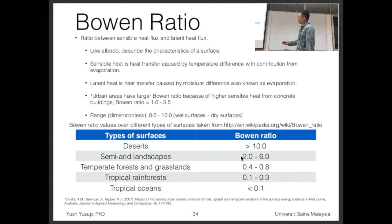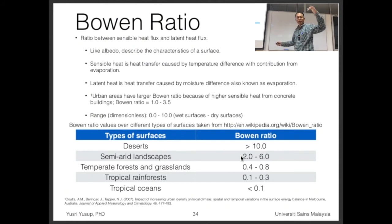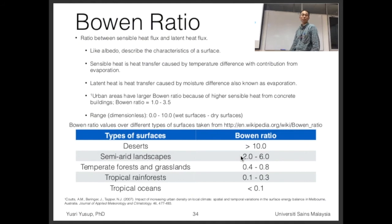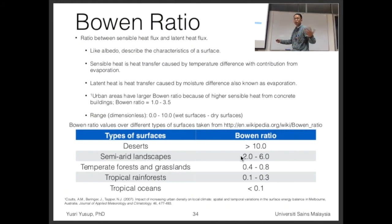Bowen ratio values over different types of surfaces: deserts are more than 10, as expected. Semi-arid landscapes are between 2 to 6. Temperate forests and grasslands in higher latitude four-season areas are 0.4 to 0.8. Tropical rainforests are 0.1 to 0.3. Tropical ocean is less than 0.1 because of all the evaporation. For Malaysia, the tropical rainforest estimate of 0.1 to 0.3 would be a good input into the model.